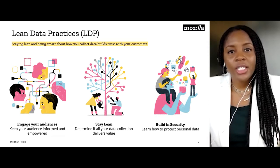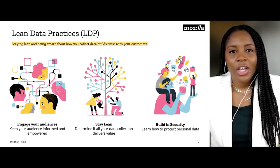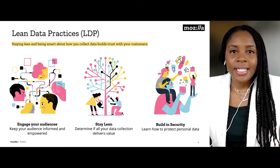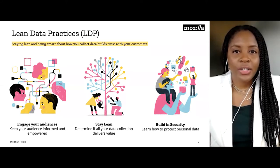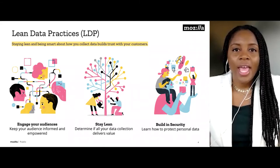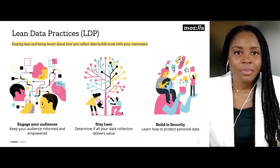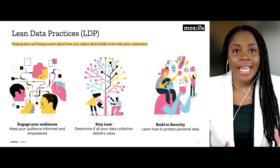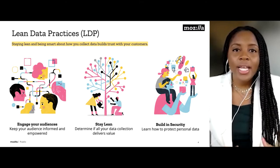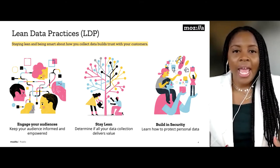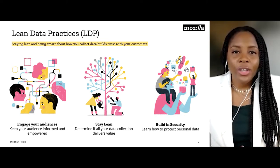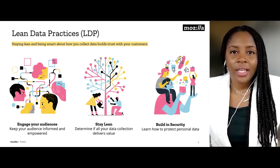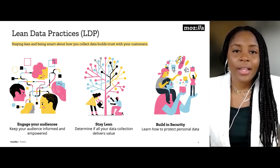There are three pillars to Lean Data Practices. Our first is engage your audiences — this is about transparency and being open with your customers so that they understand how you're using their data, what you're doing, who you're sharing it with, and are empowered to make decisions best for them. Our second pillar is to stay lean — all about data minimization and only collecting data that delivers value. And our third and final pillar is to build in security, which is about protecting the data that you have.